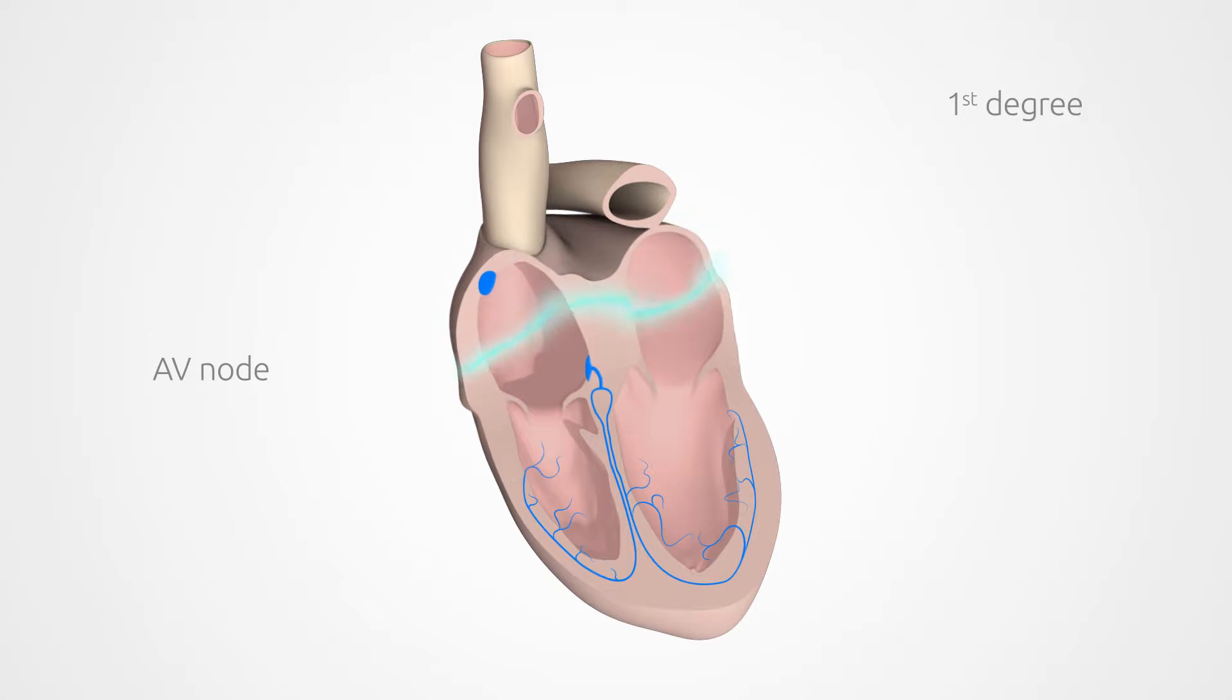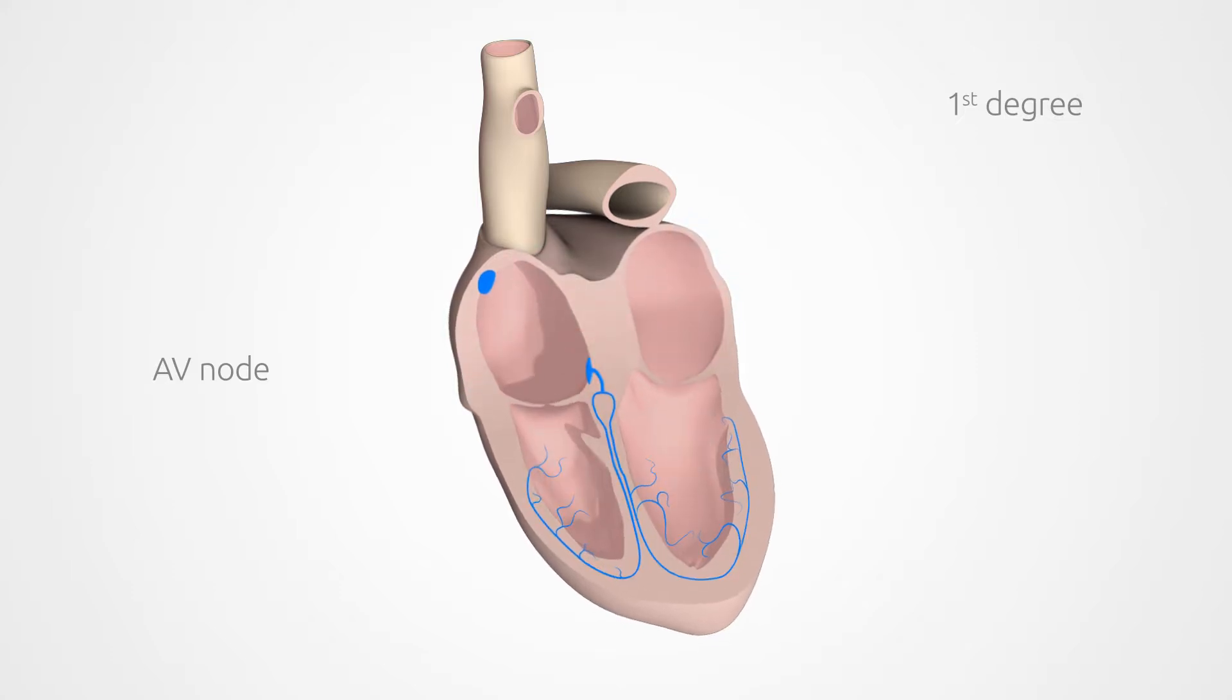In mild, first-degree AV-Block, the signals from the sinus node are passed on only slightly later than usual. The heart still beats rhythmically and at normal speed, so it is typically not noticeable.